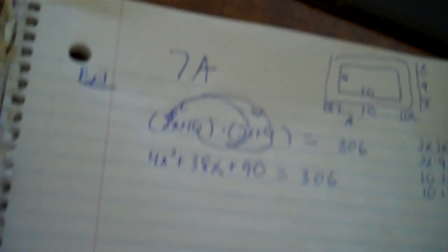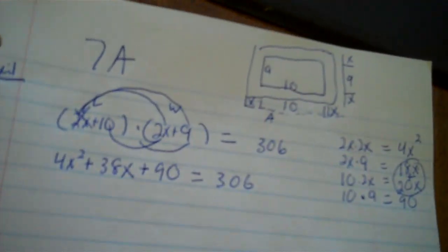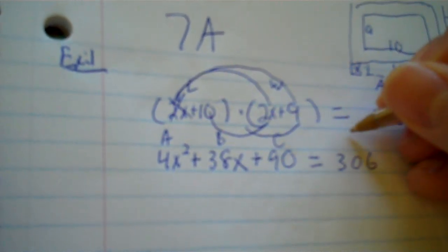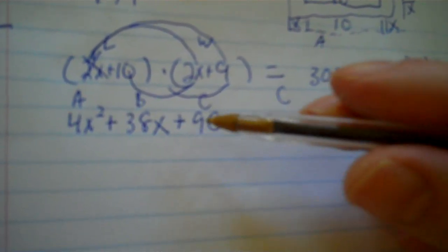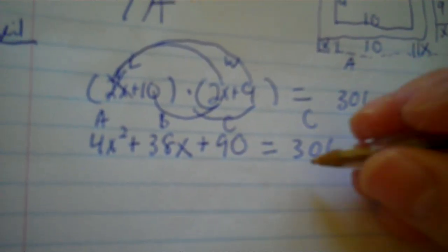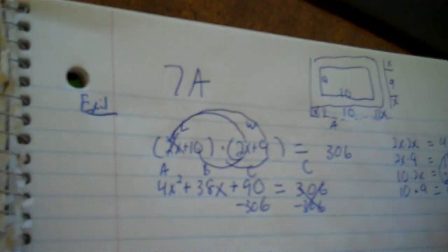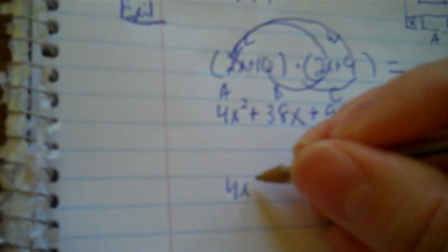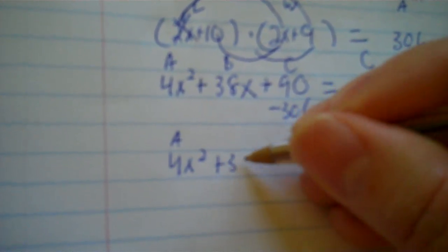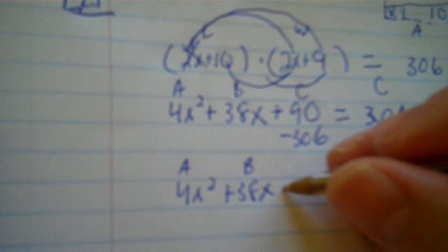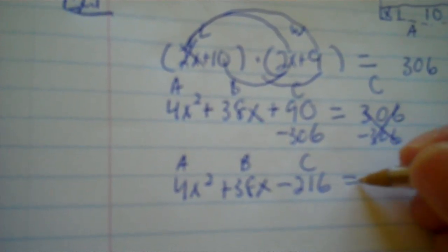Now forget that this is a story problem and solve the equation. It's a quadratic equation and there would be two answers. So this is A, this is B, and I have two C's. I need to get everything to one side, so I get the 306 to 0 by subtracting. So I have 4x squared — there's my A — plus 38x — there's my B — and 90 minus 306 is negative 216 — there's your C — and you have 0.